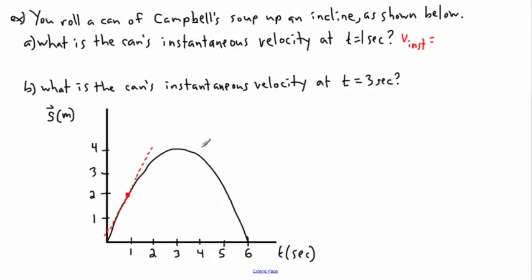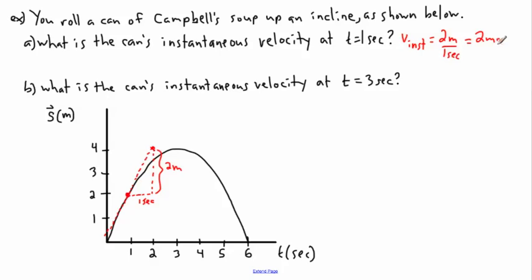I draw a tangent line at that point — a line that matches the curve there. To find its slope, I pick two points on that dotted line. The rise is 4 minus 2, which is 2 units, and the run from 1 to 2 is 1 second. So the slope is 2 meters over 1 second, which equals 2 meters per second.